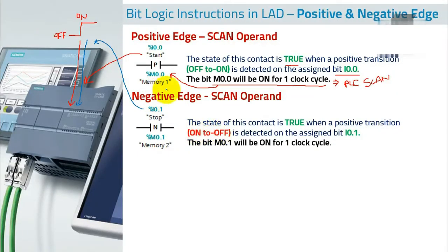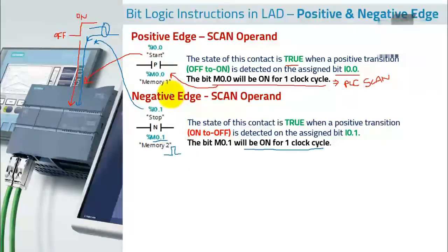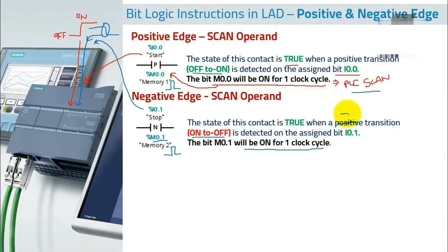If this input has an on-to-off transition — meaning if it is already on and then goes off — at that particular instant, bit M0.1 will be on for one clock cycle. In both cases you get a pulse, its duration equivalent to the PLC scan time. But for the positive edge the pulse occurs on off-to-on transition, and for the negative edge it's a negative transition.